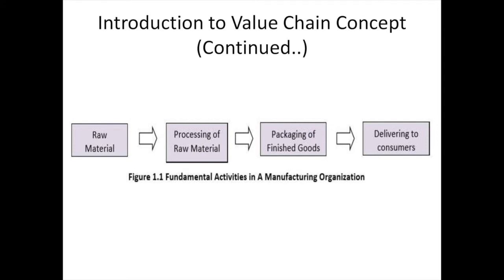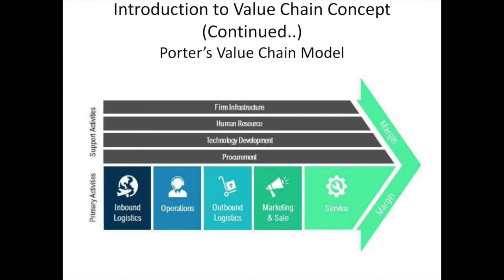The fundamental activities in a manufacturing organization start with raw material, then processing of raw material, then packaging the final product into finished goods, and then delivering it to consumers. In Porter's value chain model, activities are divided into primary and support activities. Primary activities include inbound logistics, operations, outbound logistics, marketing and sales, and service. Support activities include procurement, technology development, human resource management, and firm infrastructure.